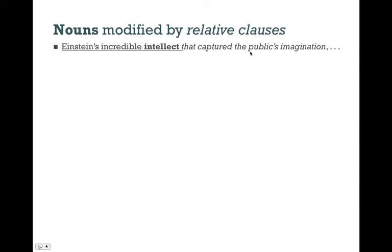That captured the public's imagination — here we have the relative pronoun that, referring to Einstein's incredible intellect. We have the verb captured, which is a transitive verb (VT), and we have the object imagination — the public's imagination. What captured the public's imagination? Einstein's incredible intellect captured the public's imagination. So the pronoun that refers back to or equals this whole noun phrase.